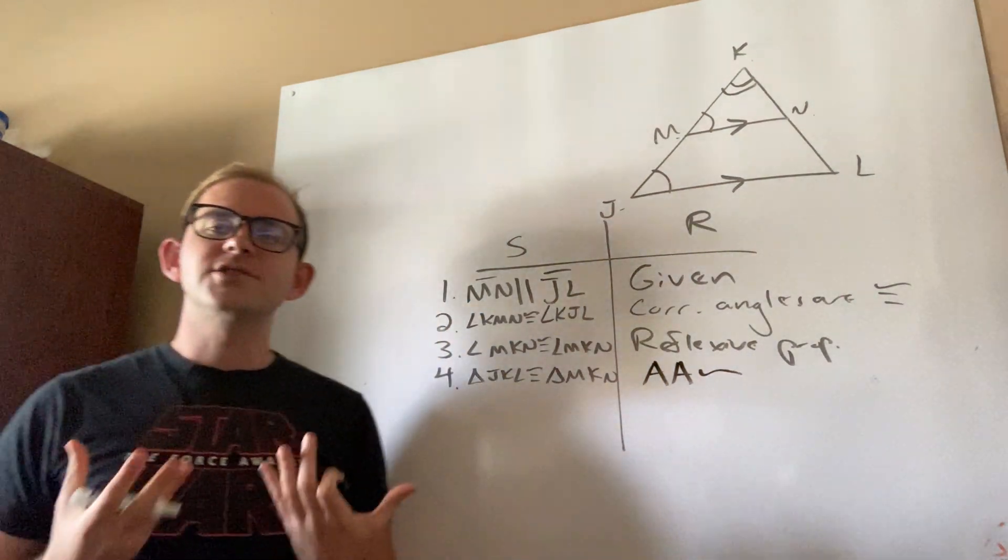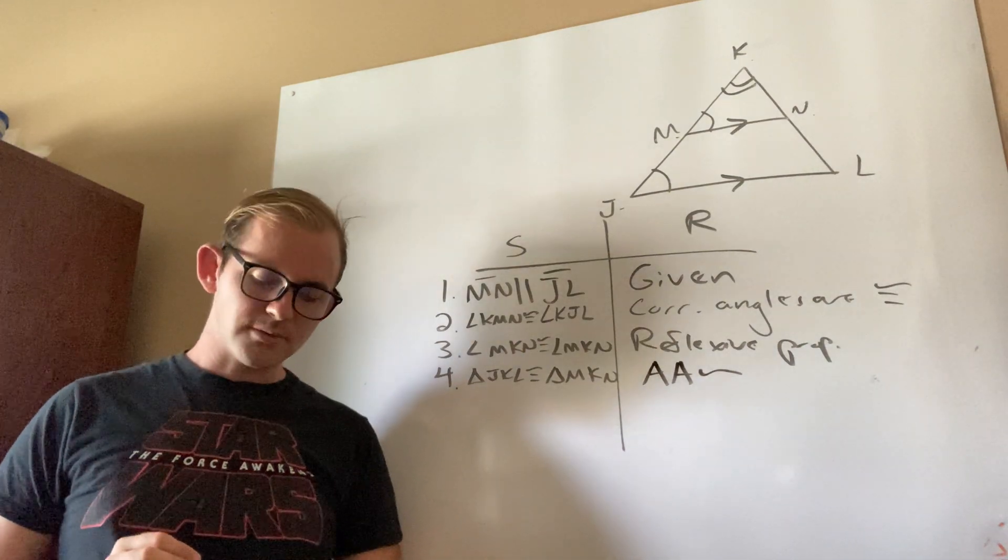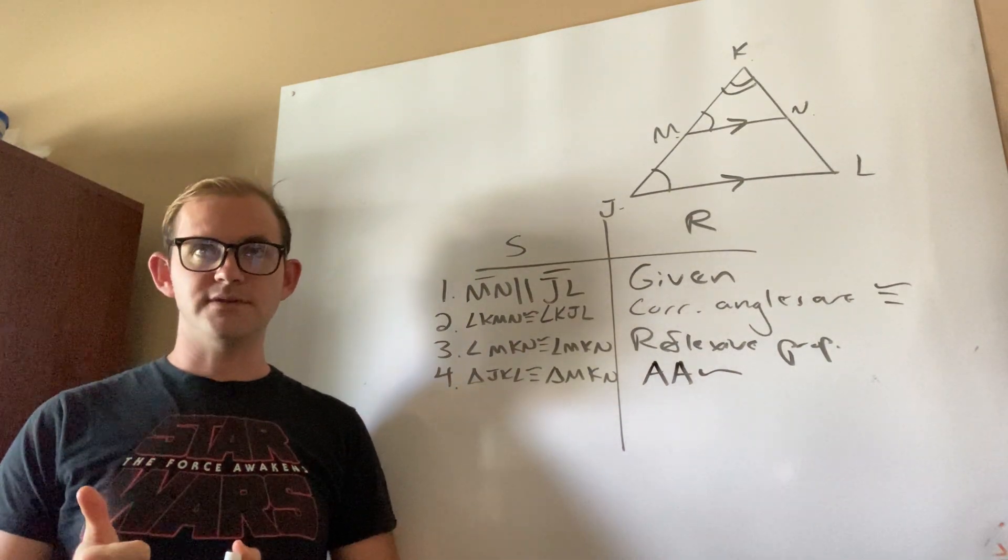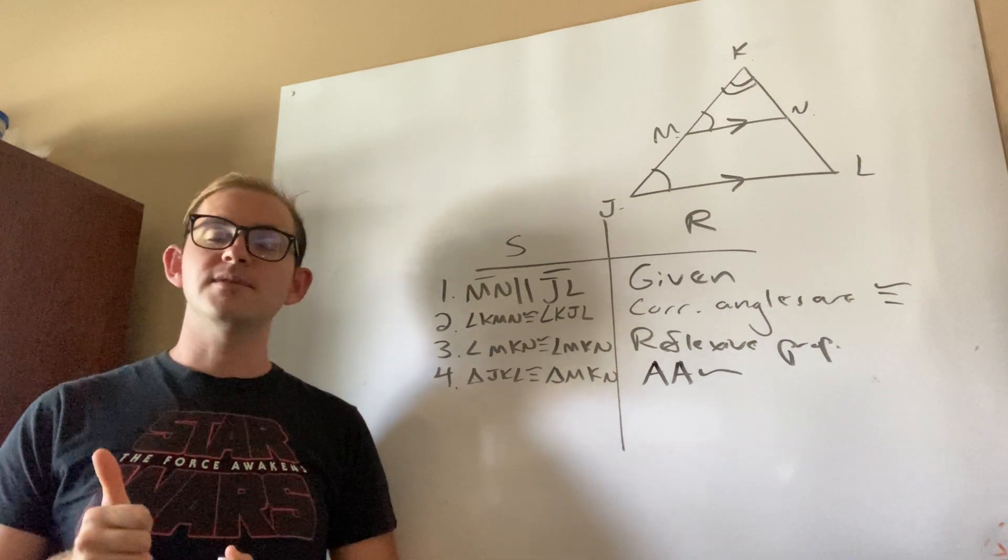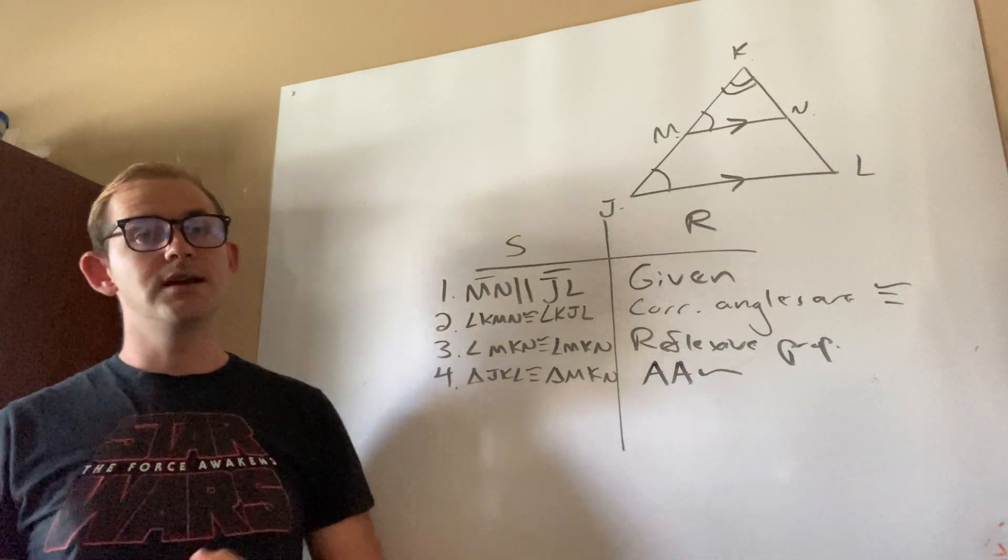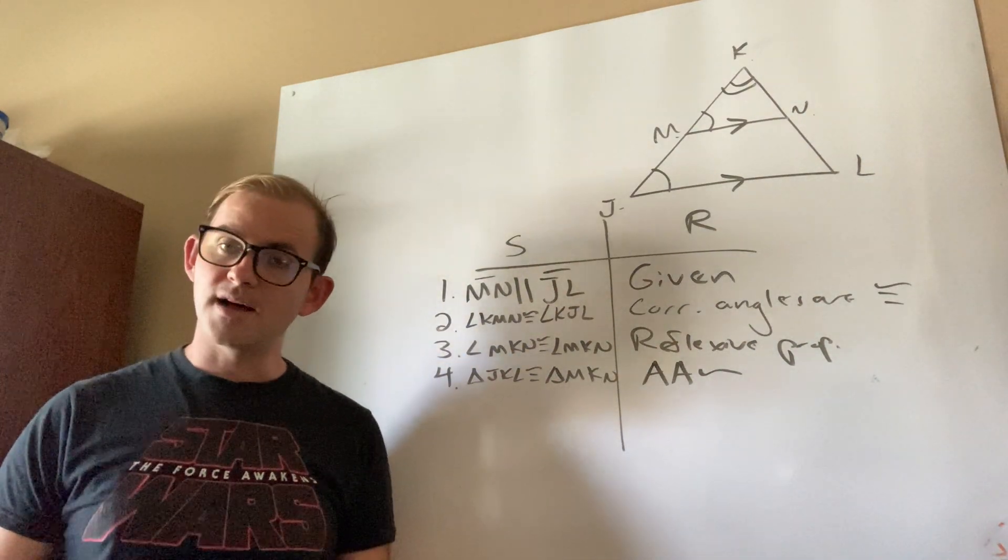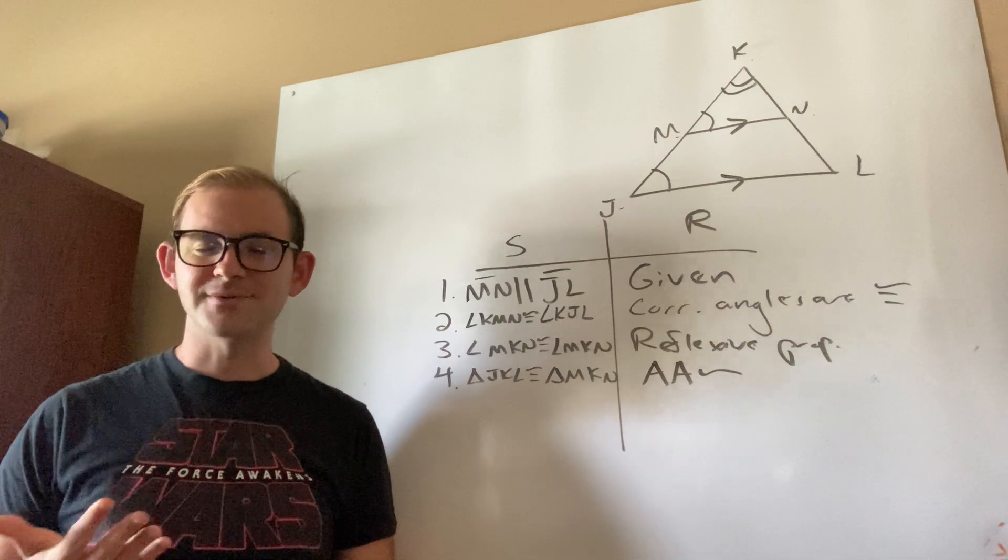So what are the major takeaways from this particular proof? Well, takeaway number one, reflexive property is very useful. Reflexive property can be used either for shared sides, as with triangle congruence, or in the case of triangle similarity, a lot of it's going to be shared angles between two triangles.